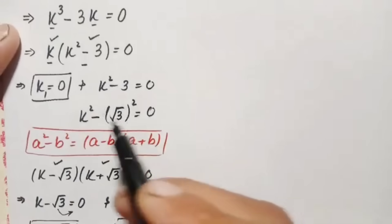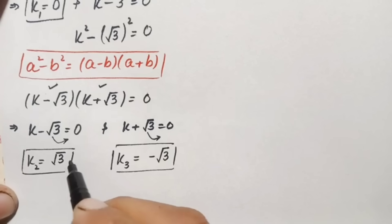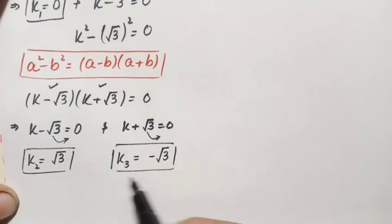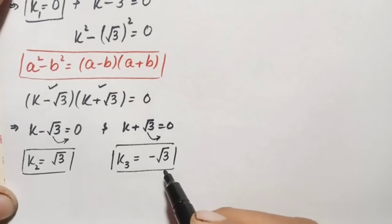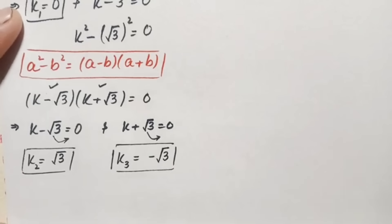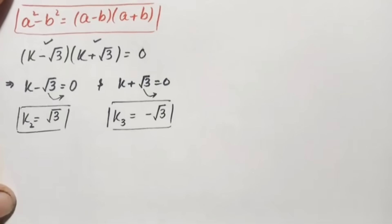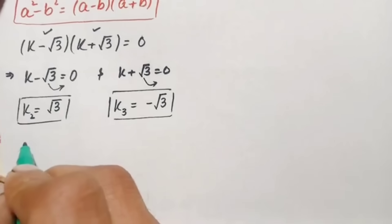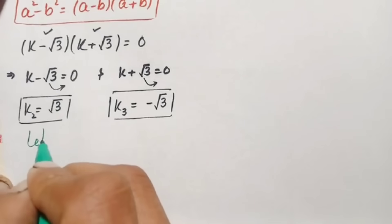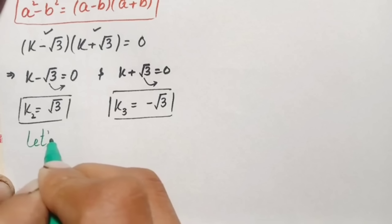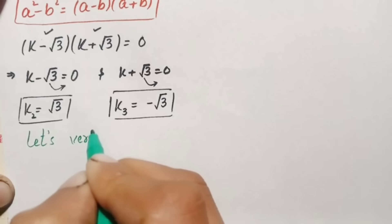So finally we have three possible solutions: k₁ equals zero, k₂ equals √3, and k₃ equals negative √3. We will now verify that these solutions are correct.